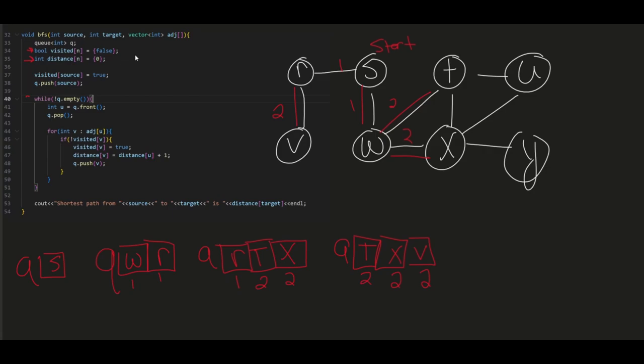We're still in the while loop. We're going to pop T and add its neighbors. We've already been to W. We've already been to X. The next neighbor is U. So let's have our updated queue here. Add U to the end of the queue with the distance of 3.